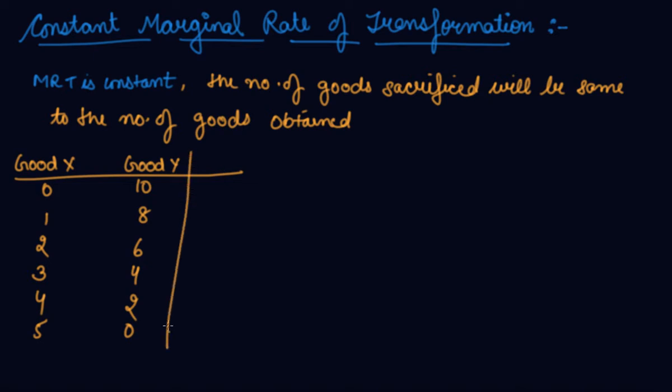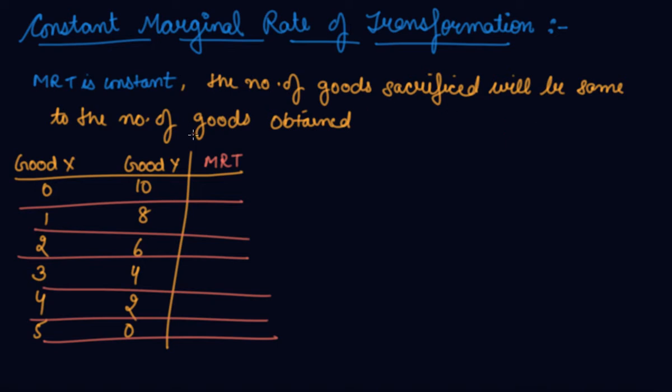What is your marginal rate of transformation here? I told you the formula in the previous video. Your number of goods sacrificed here is 2 and obtained is 1. Here also you are sacrificing 2 and obtained is 1. Here also you are sacrificing 2 and obtained is 1.